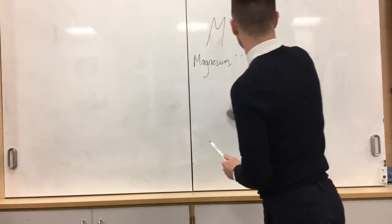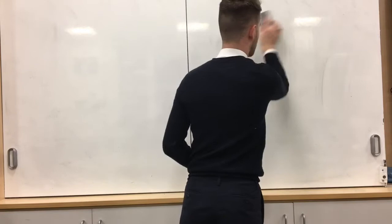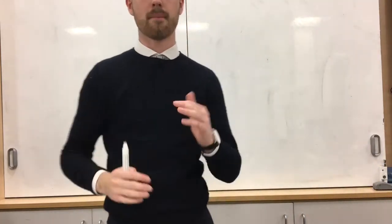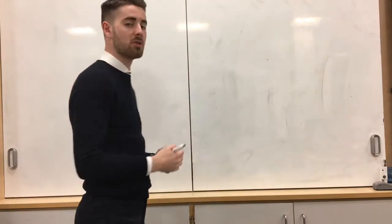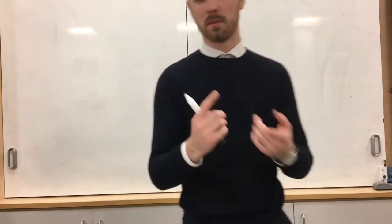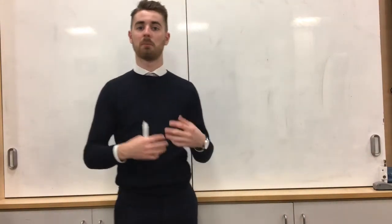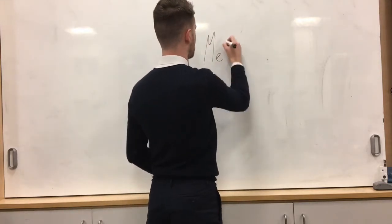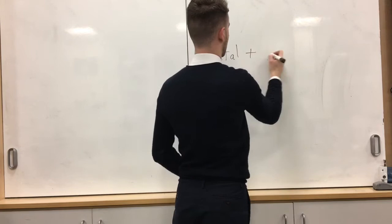Next we're going to look at the general equation. So this is the third and final equation we'll look at for metals reacting with an acid. So we looked at metal carbonate, we looked at metal oxide and then we're looking at purely metal.